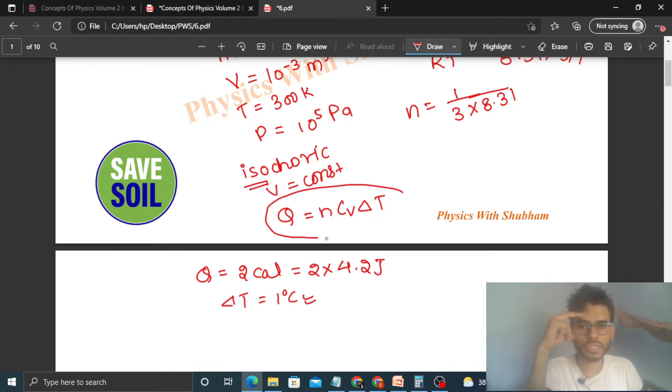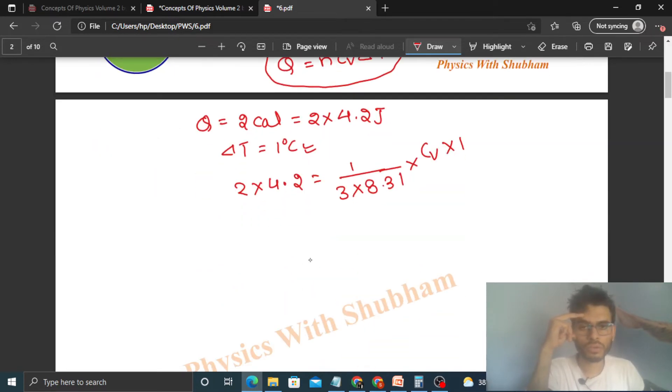So you can just put the values in this equation. Q's value will be 2 into 4.2, that is equal to number of moles that is 1 upon 3 into 8.31 into Cv into delta T that is 1. So from here you can find out the value of Cv that will be 2 into 4.2 into 3 into 8.31.